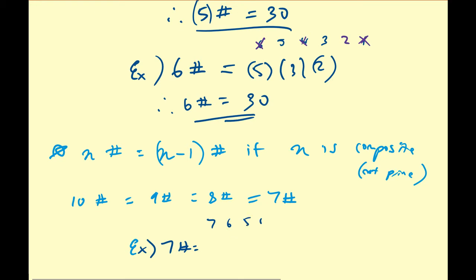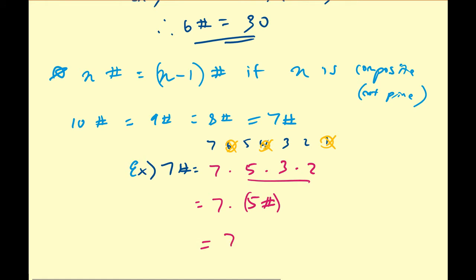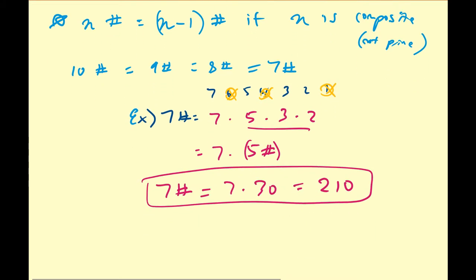So what is 7 primorial? It's the product of primes in the set {7, 6, 5, 4, 3, 2, 1}. Since 6, 4, and 1 are not prime, this equals 7 times 5 times 3 times 2. We already know that 5 times 3 times 2 is 5 primorial, which is 30. So this is 7 times 30, which equals 210. Therefore 7 primorial equals 210, and by the preceding logic, 10 primorial, 9 primorial, 8 primorial, and 7 primorial all equal 210.